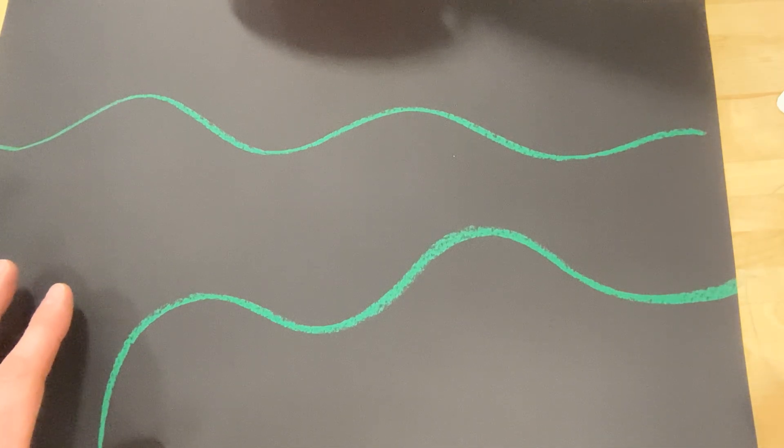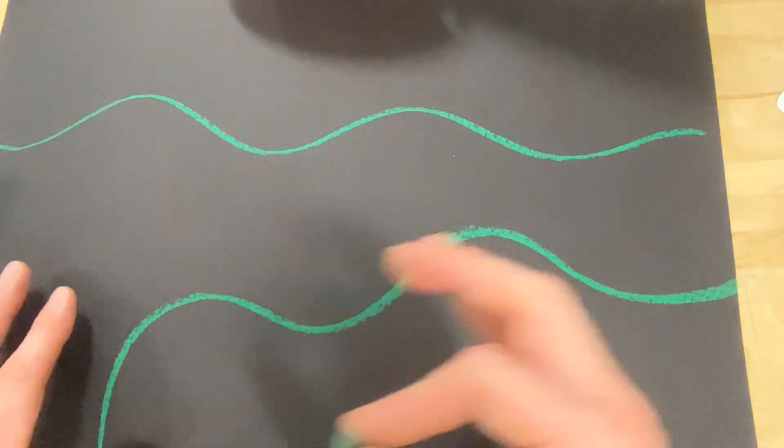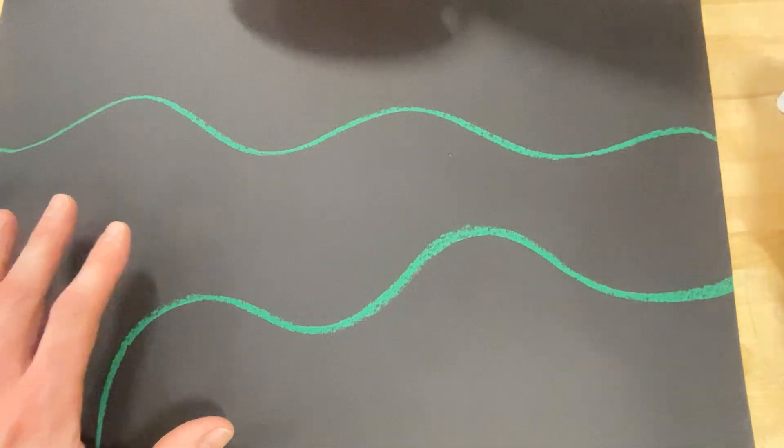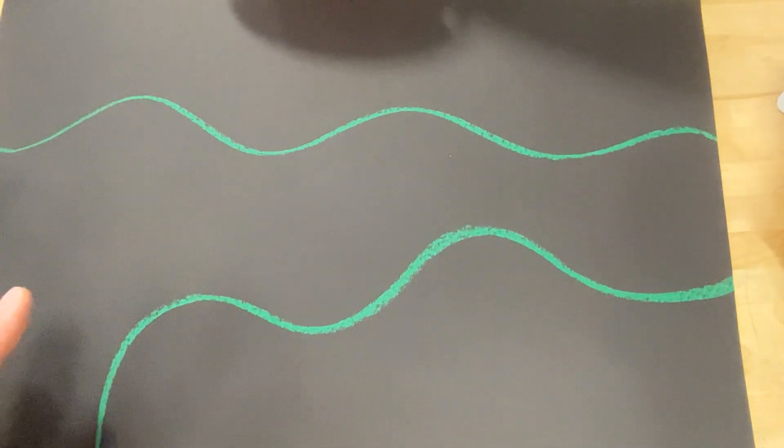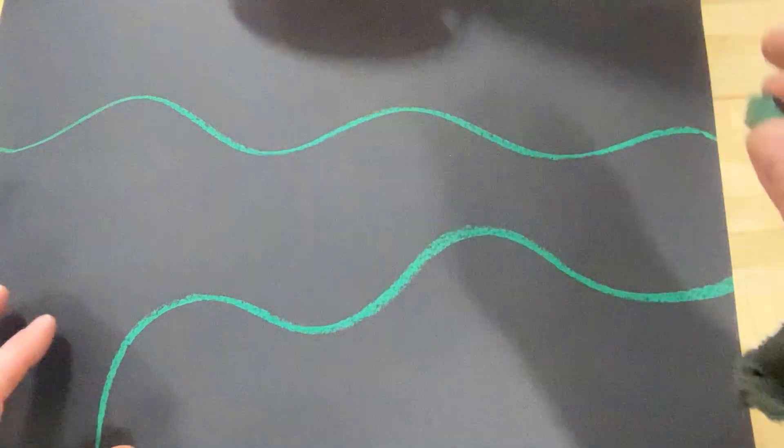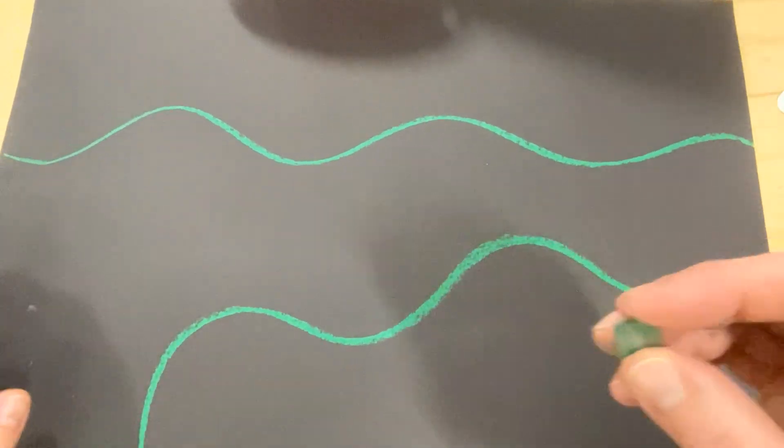I'm going to look in my chalk and grab a dark green and just make a few of these going around the page. Stretch across, touch the different sides. They should not stop in the middle. Let's do one more. I feel like three is good.